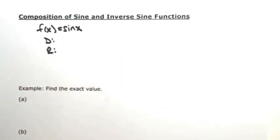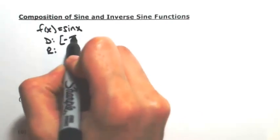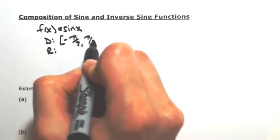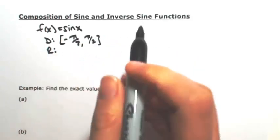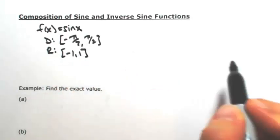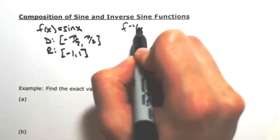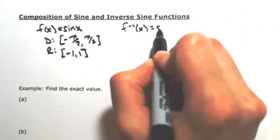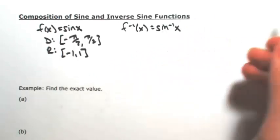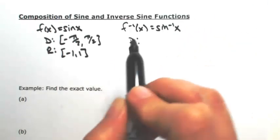Now to make sure that this had an inverse, we had to make sure it was one-to-one, so we restricted the domain between negative pi over 2 and pi over 2. The range of sine is just the regular range of sine from negative 1 to 1. So then its inverse, the inverse sine of x, is going to flip-flop these domain and ranges.